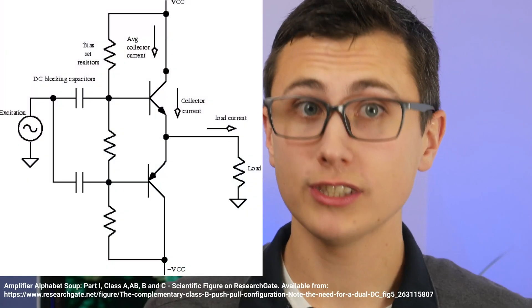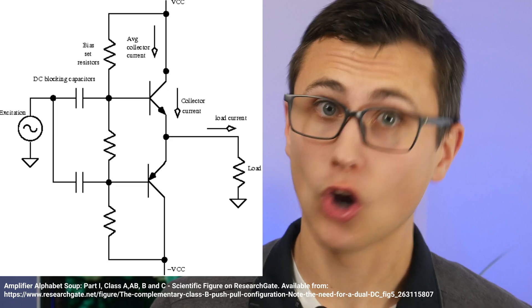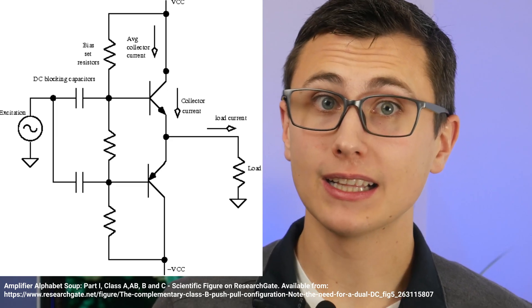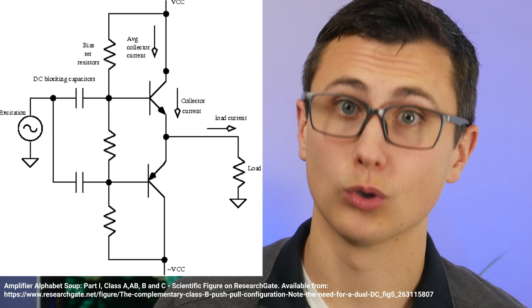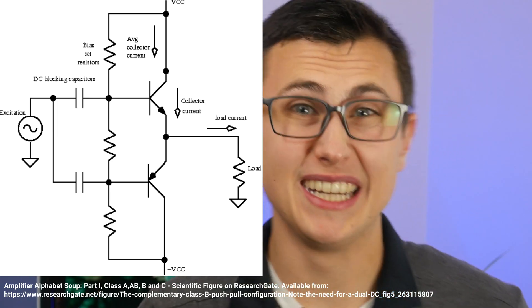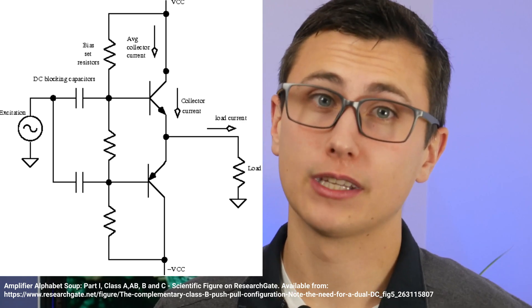Unfortunately, I really just can't cover everything there is to know about Class A, B, and AB amplifiers in this video. Class B: there is no steady state current required in this type of amplifier, but that comes at a cost — signal quality. Class B amplifiers exhibit something known as crossover distortion, which ultimately comes down to the non-linearity of transistors when the base current approaches zero.